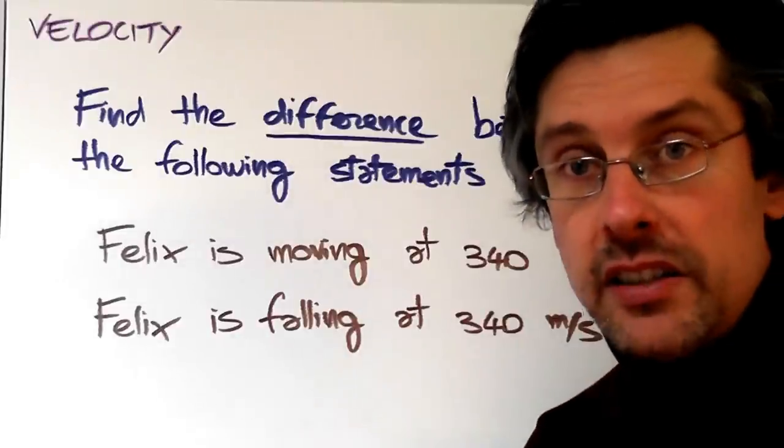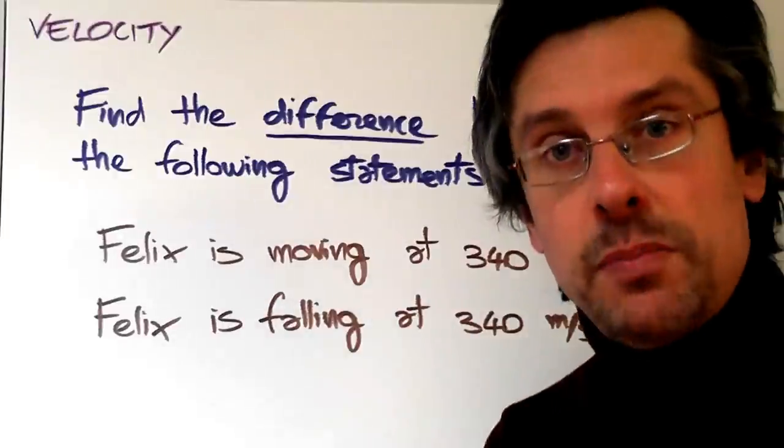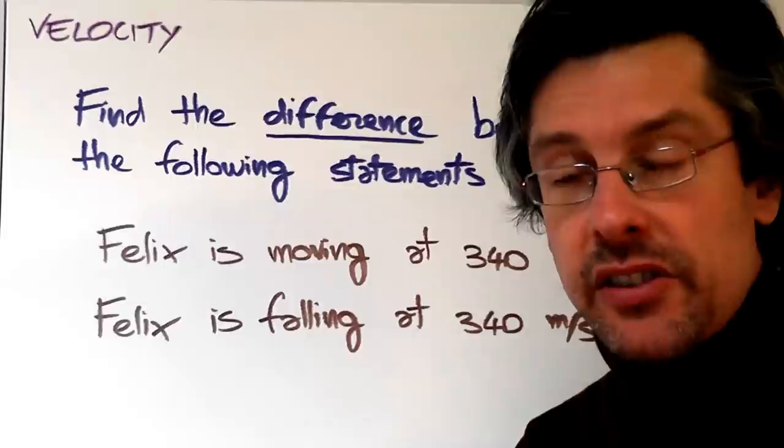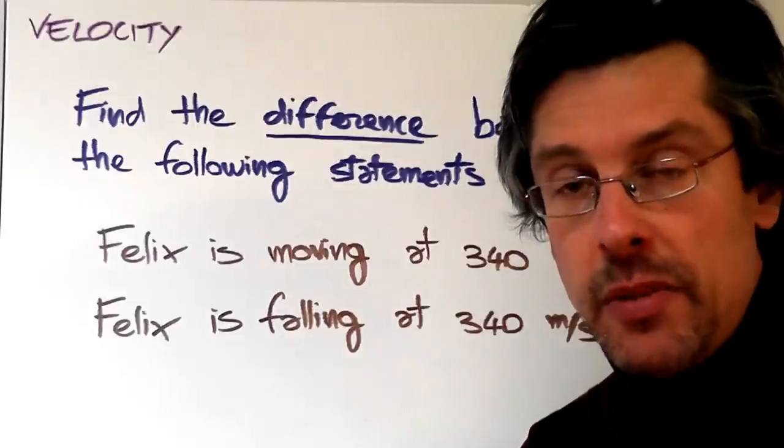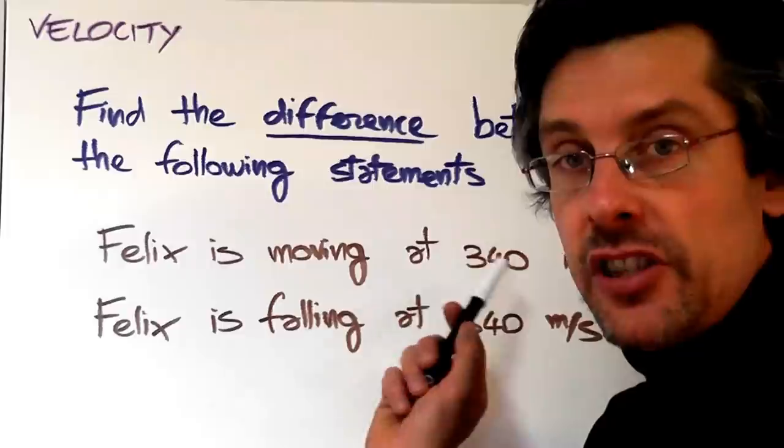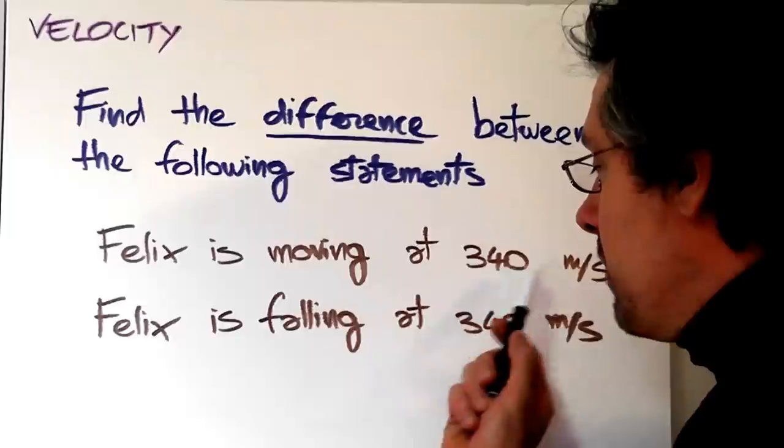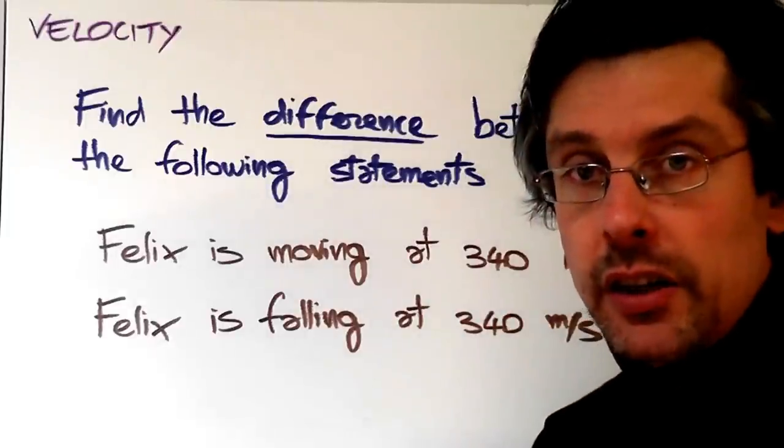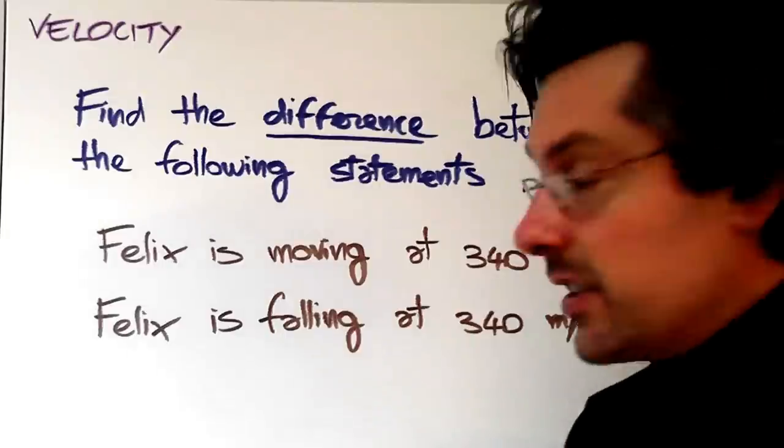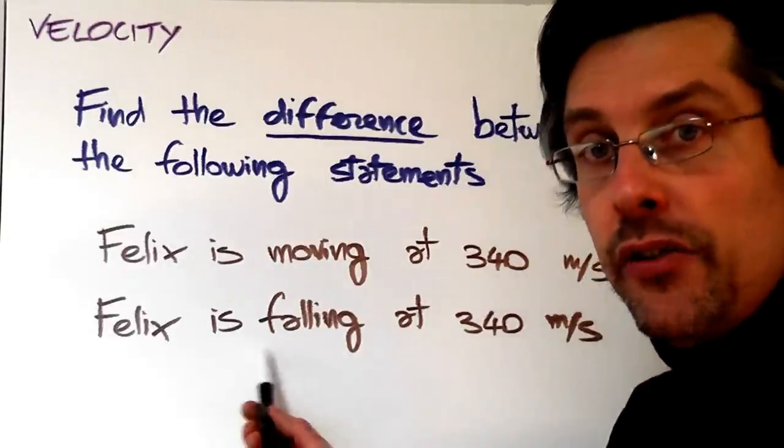They're both dealing with Felix who is moving, traveling at a very high speed. Actually, this is the speed of sound. But one of these two sentences is actually giving me extra information because the first sentence is just telling me what is the speed of Felix. So you have a number and the corresponding unit. Well, the second one not only is giving me the speed of Felix, it's also telling me in which direction Felix is moving.